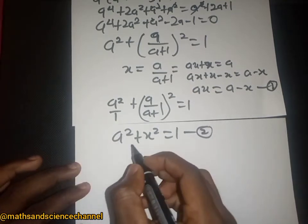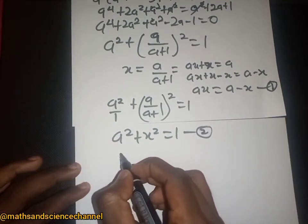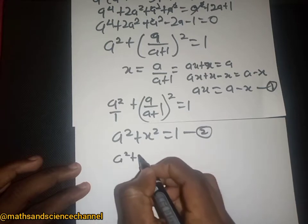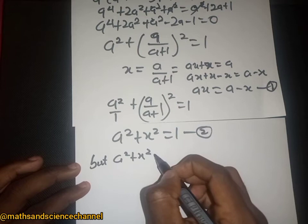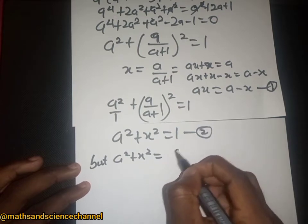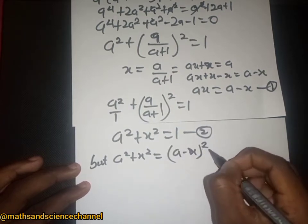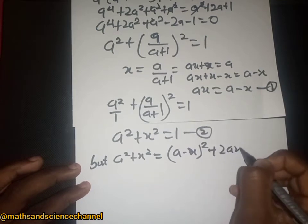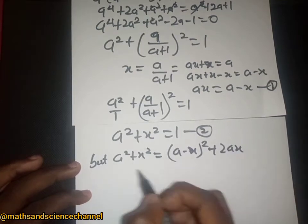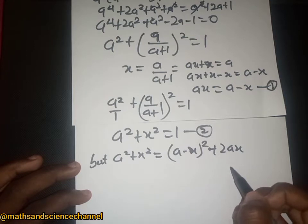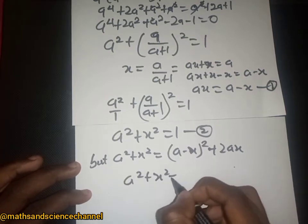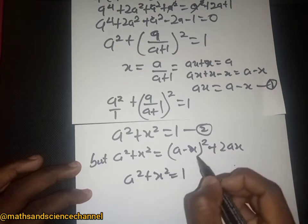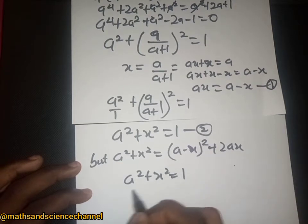Now since we have equation two, let's try to expand. We note that a squared plus x squared is just (a minus x) squared, plus 2ax. So a squared plus x squared minus... equals one, and we will replace those terms accordingly.